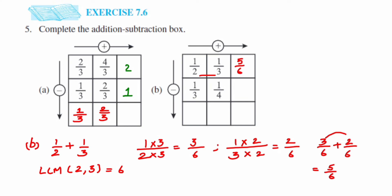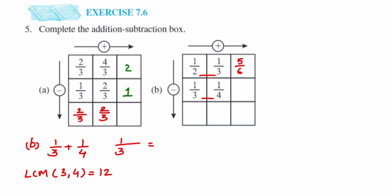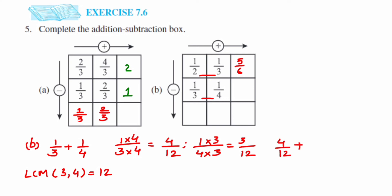Next addition: 1/3 plus 1/4. The denominators are different, so we take the LCM of 3 and 4, which is 12. For 1/3, multiply by 4 to get 4/12. For 1/4, multiply by 3 to get 3/12. Adding: 4/12 plus 3/12 — denominator stays 12, and 4 plus 3 equals 7. The answer is 7/12.